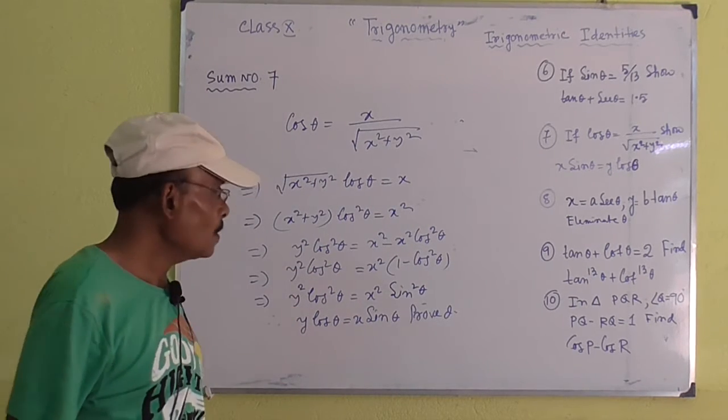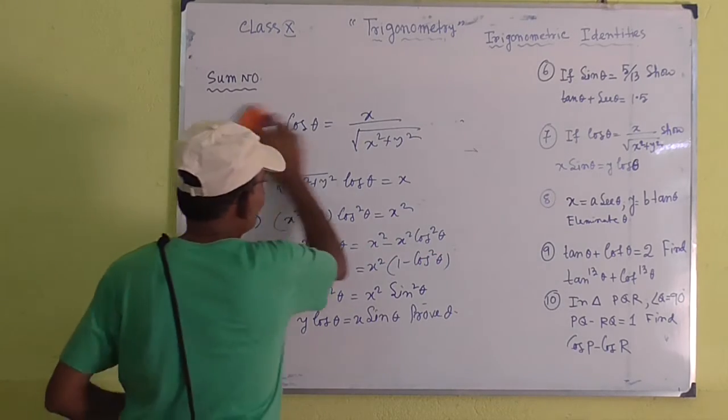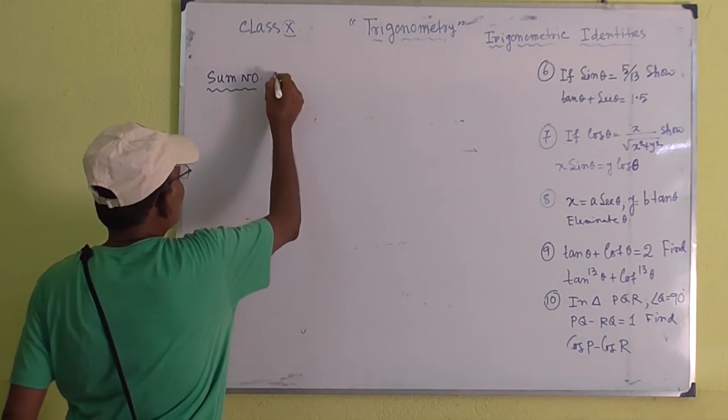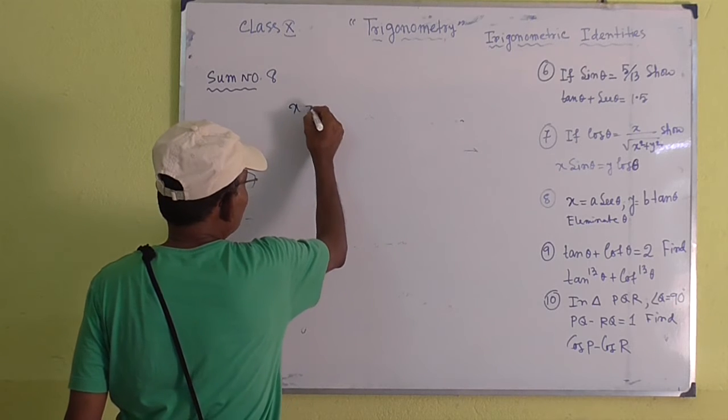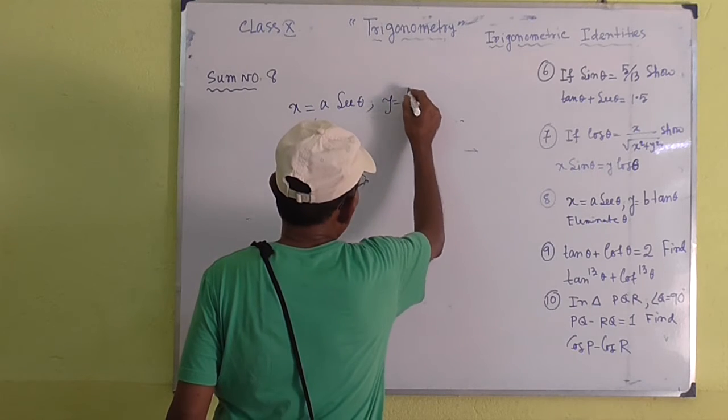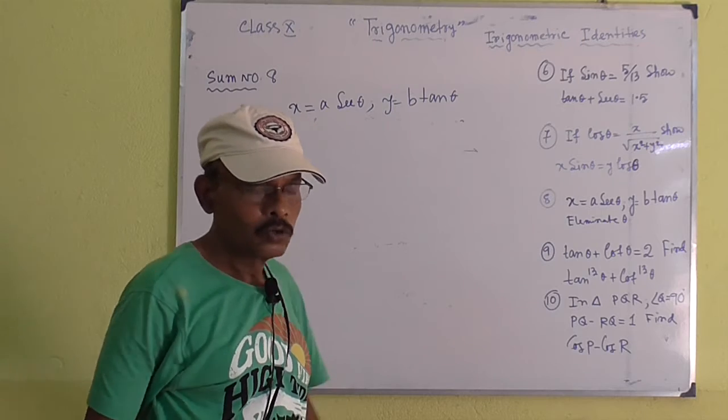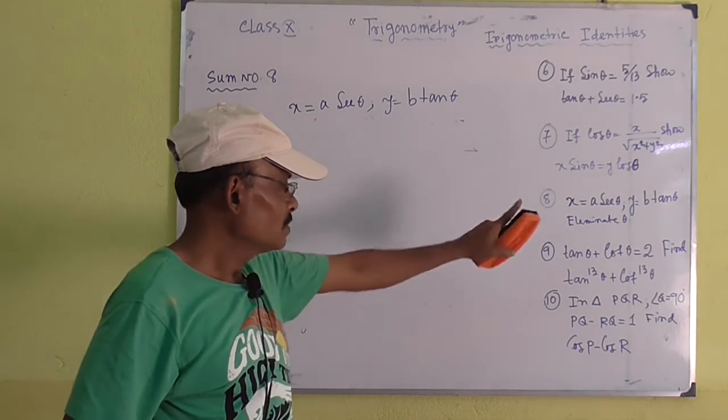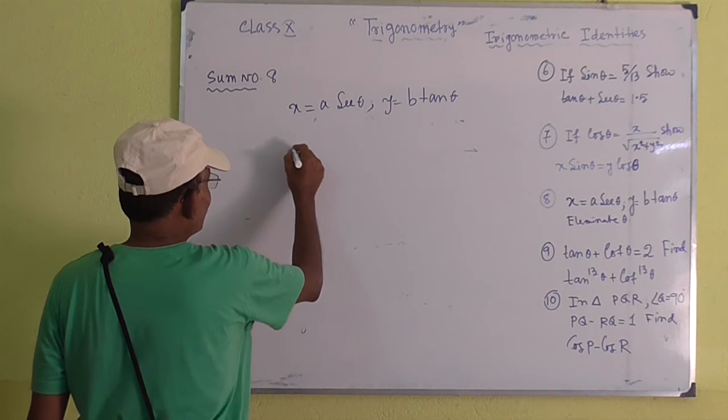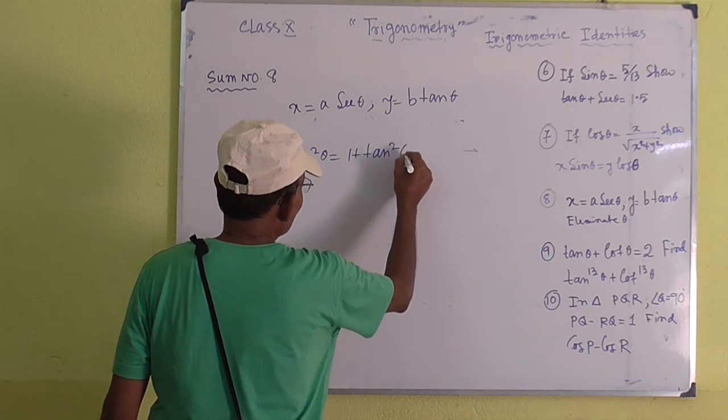Clear? Now I will start question number 8. Sum number 8: x equals A sec theta, y equals B tan theta. The question is eliminate theta. So we have to remove theta from the relation x equals A sec theta and y equals B tan theta. We know that sec square theta equals 1 plus tan square theta.